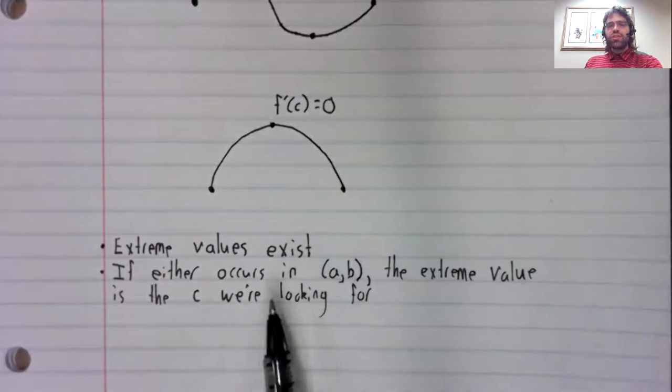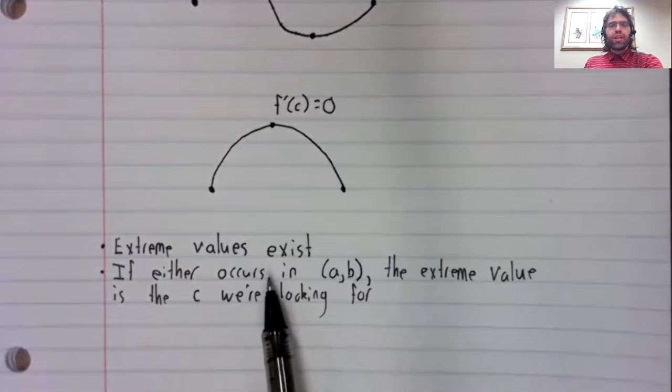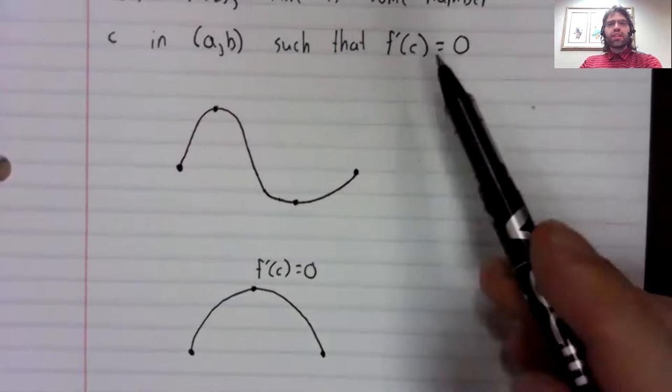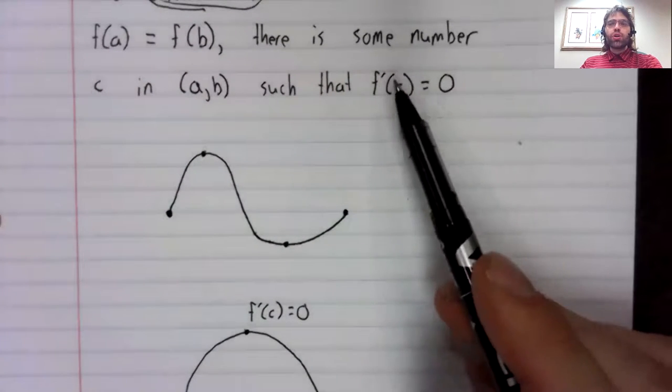So at the extreme value, the derivative is zero. And that's precisely what we're looking for.